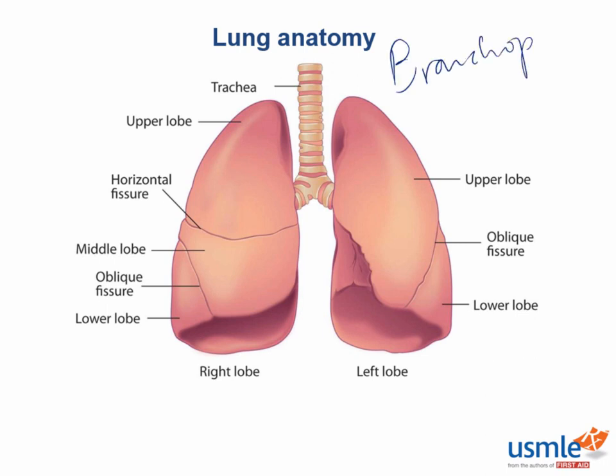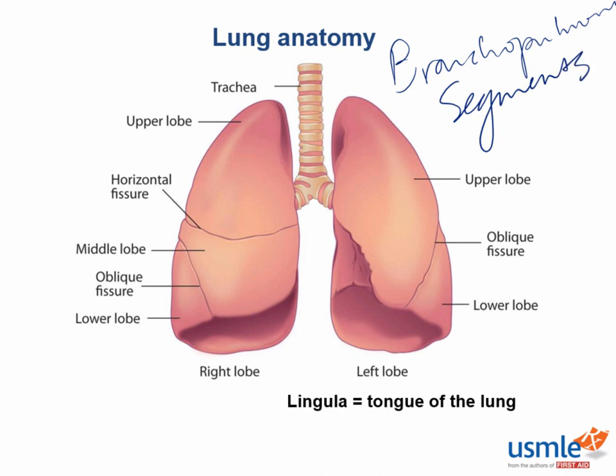Lungs themselves are made up of smaller units called bronchopulmonary segments. The lung has a dual blood supply: deoxygenated blood from the pulmonary arteries and oxygenated blood from the bronchial arteries — similar to the liver, which receives blood via the portal vein and hepatic artery. Blood is delivered to each bronchopulmonary segment via a bronchial and pulmonary artery, which run in the center of the segment, while venous blood and lymphatics drain along the edges. Board exams commonly test this relationship, so remember: arteries run in the center, and veins and lymphatics run along the edges. This is a very high yield concept.